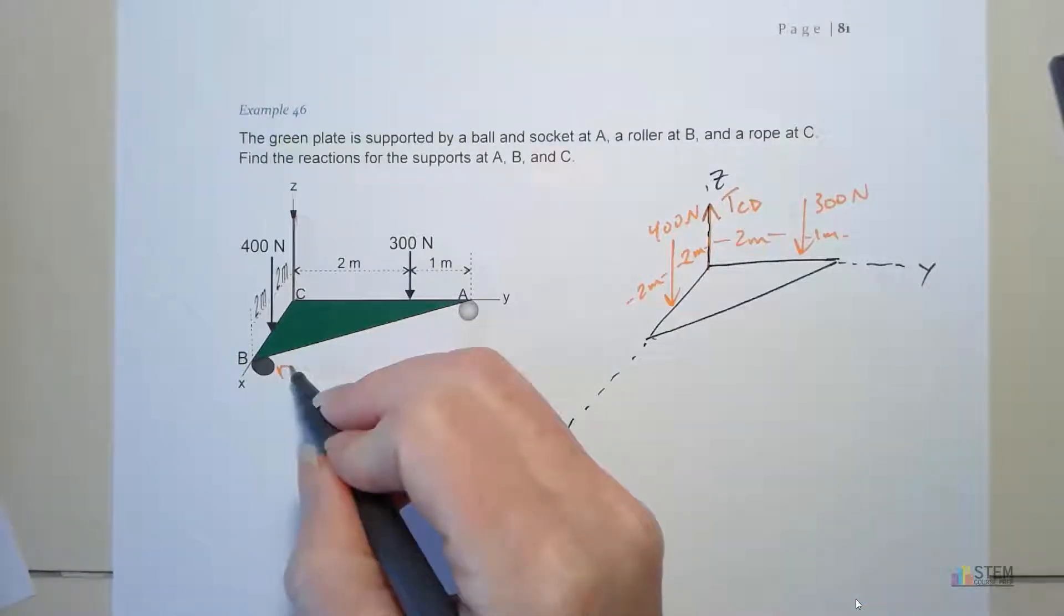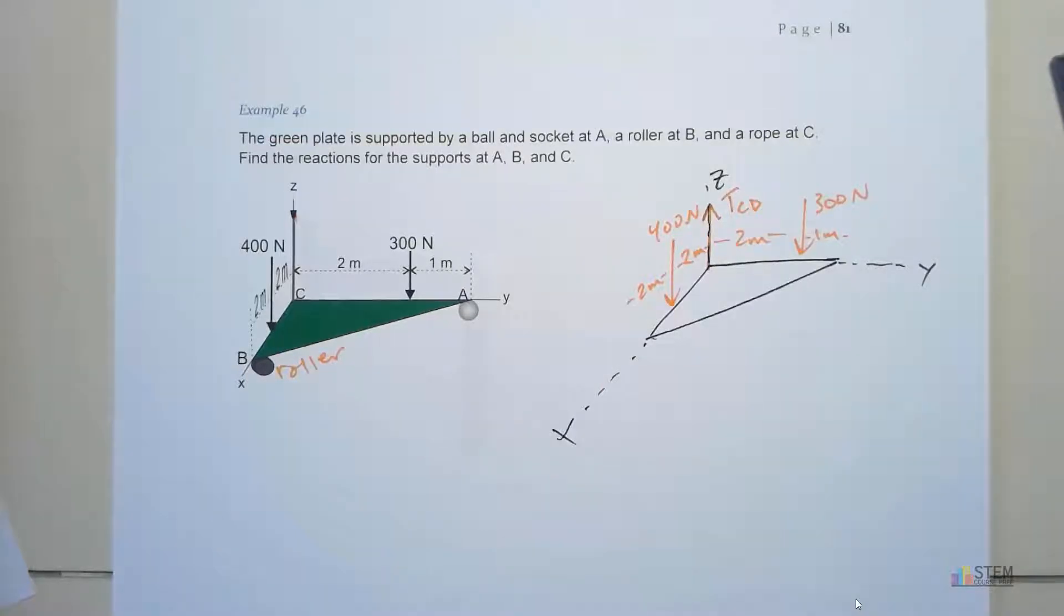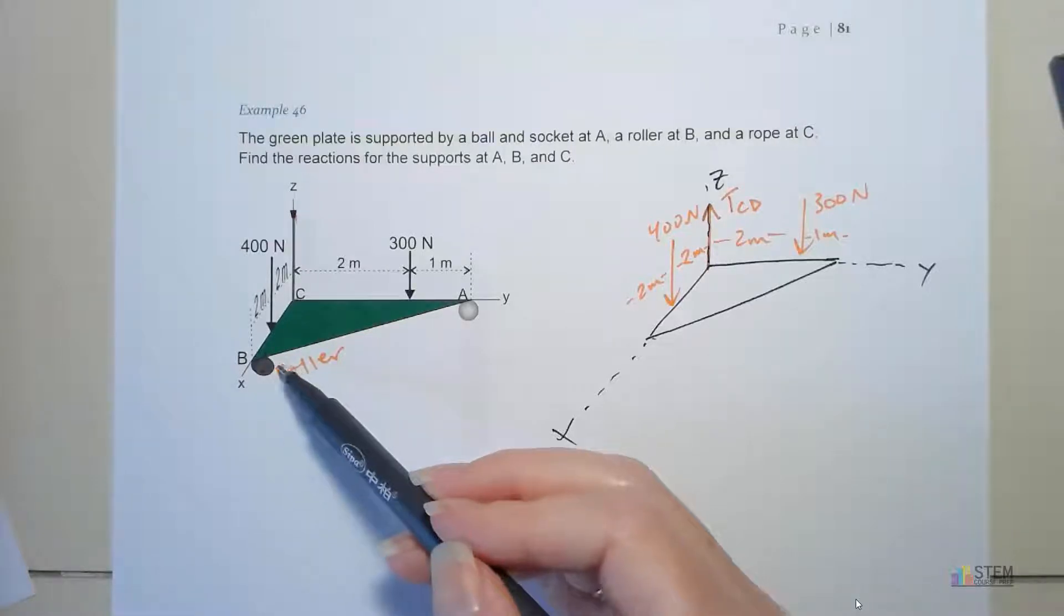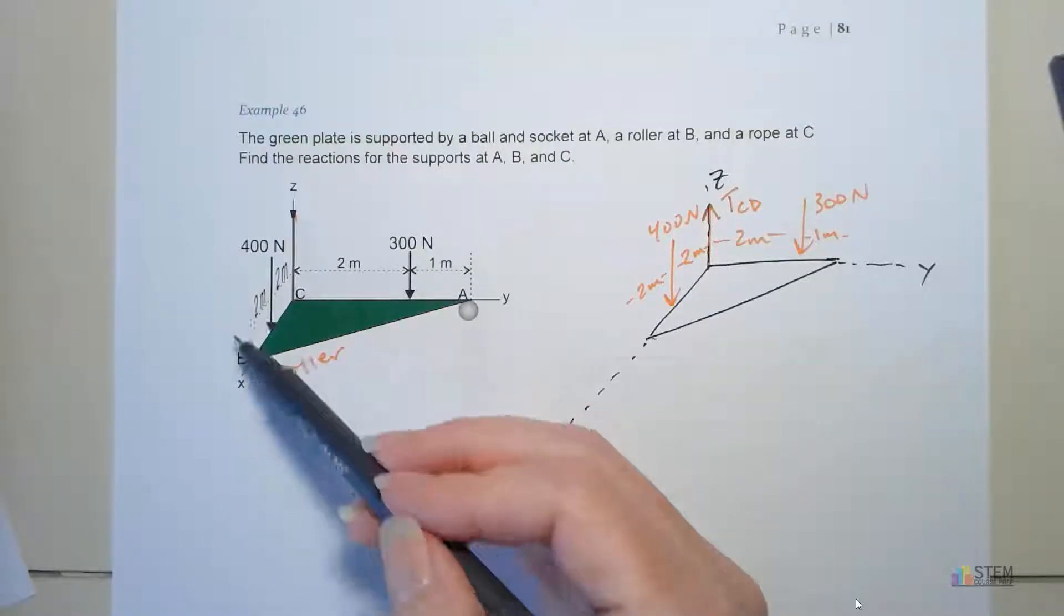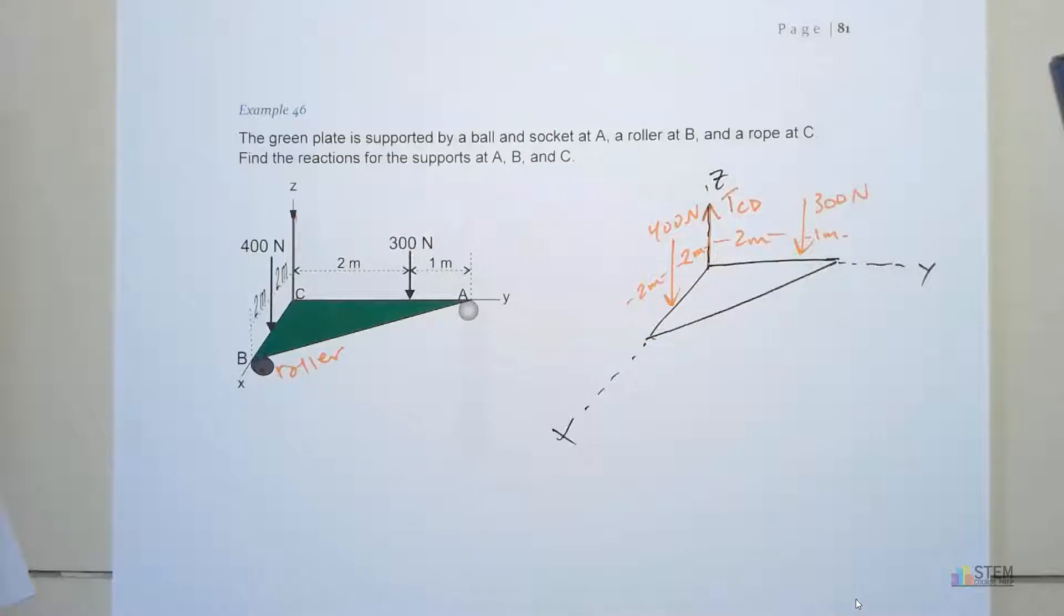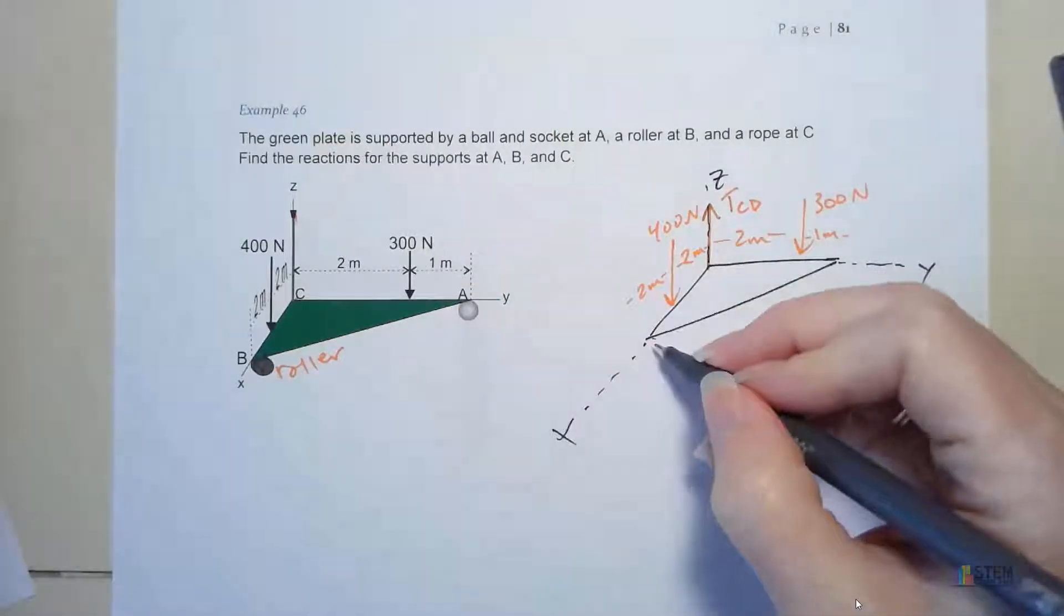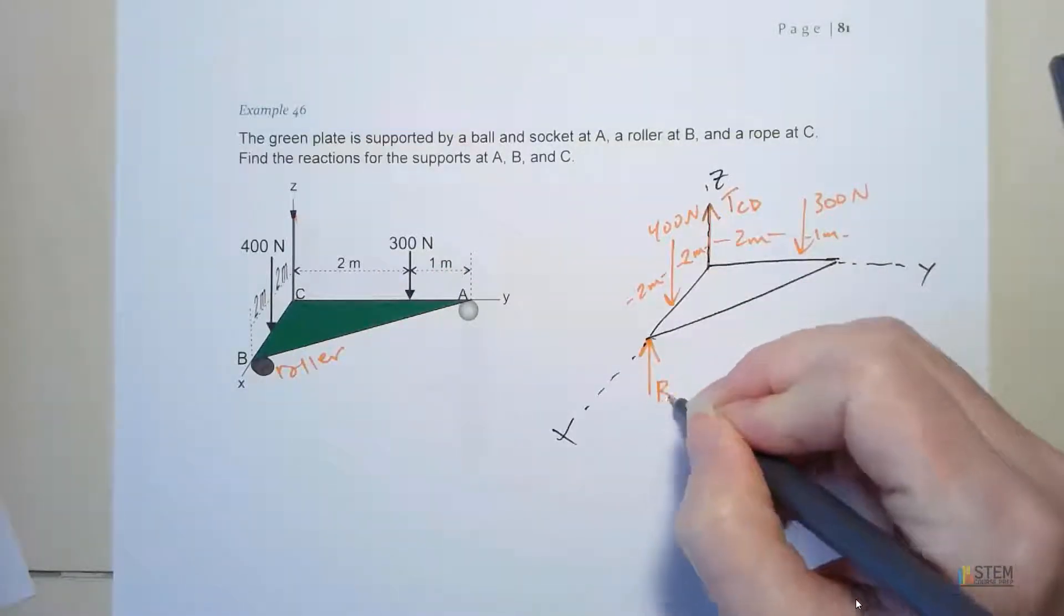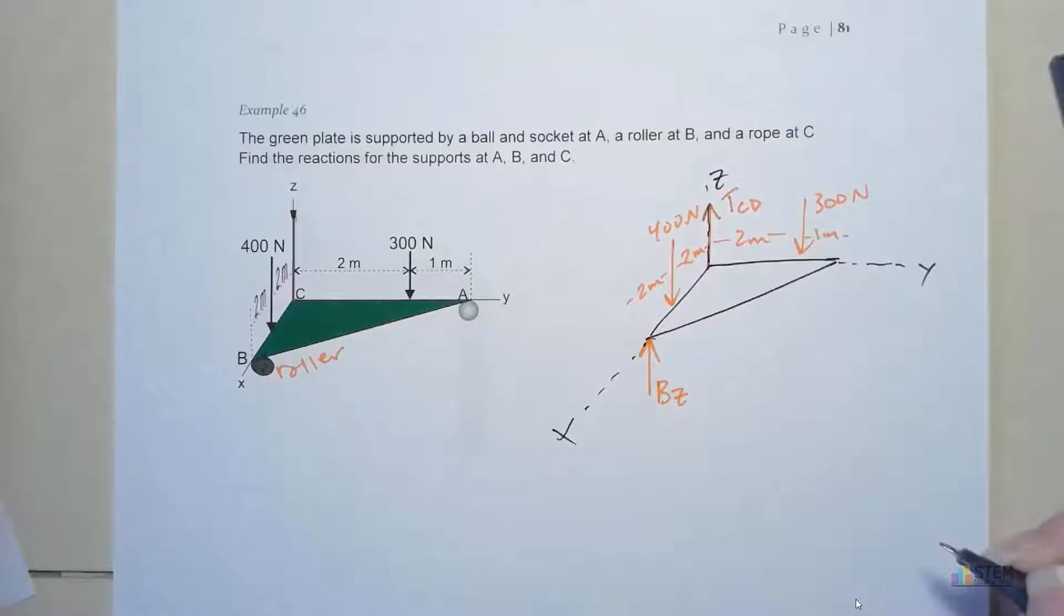That will be the force due to that rope. Then we've got this roller. What does a roller do? A roller just basically allows something to sit on top of it and supports it, keeps it from falling down further. This is basically just resting on top of the roller. You can still move the plate back and forth or pull it up. We can't push it down because that roller is there. So the force supplied by the roller is BZ, going up.